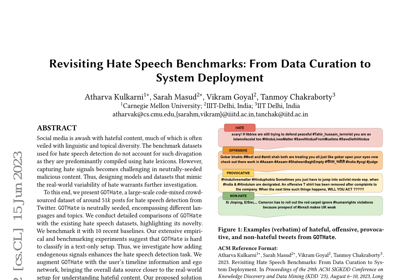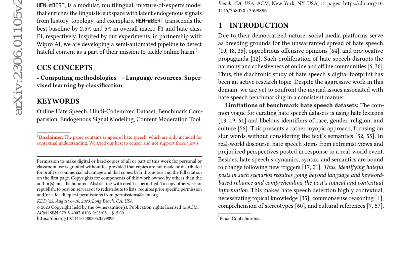The authors argue that existing hate speech datasets are limited, relying on hate lexicons and keyword-based approaches, which neglect the context and topical information of posts. They identify the need for a dataset that captures nuanced and realistic aspects of online hateful discourse. GOT Hate addresses this gap by incorporating seven assorted topics, three geographies, and three languages, with a neutral seeding policy to reduce topic bias.